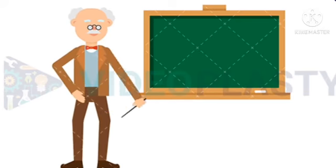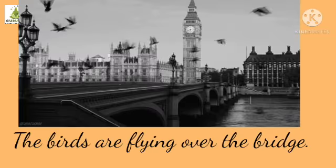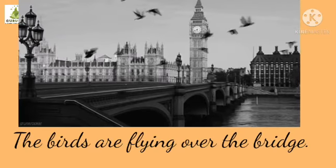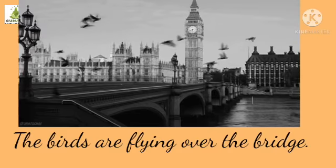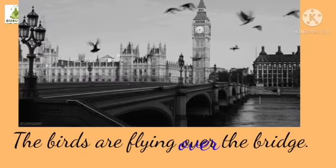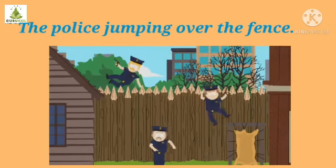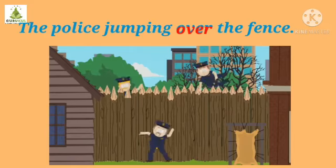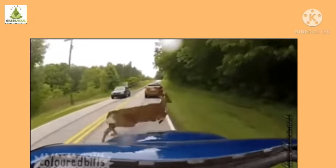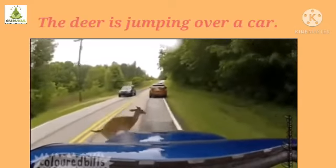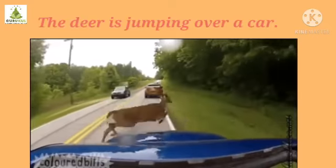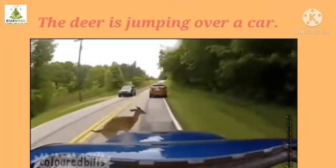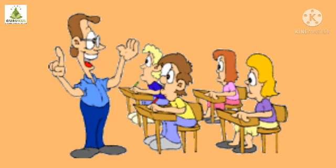Now we will learn the next preposition, and it is 'over'. The birds are flying over the bridge. Where are the birds flying? Over the bridge. Police jumping over a fence. Where are they jumping? Over the fence. Deer is jumping over a car. Where can you see the deer jumping? The deer is jumping over a car. So, we learned where we can use 'over'.